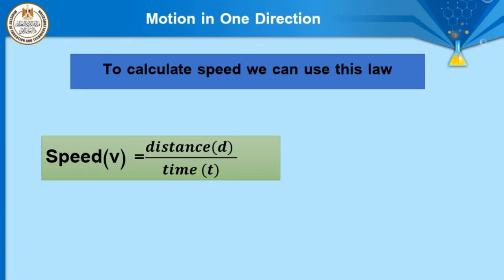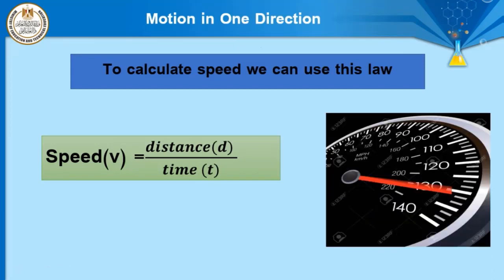Speed equals distance over time. Speed has a direct relation with distance and an indirect relation with time. When an object covers a distance in a shorter time, it is very fast — the speed increases. Speed can be represented by the letter V because it may also be called velocity. Distance is represented by D and time by T.